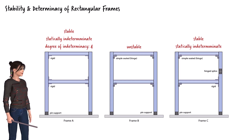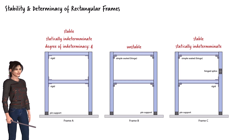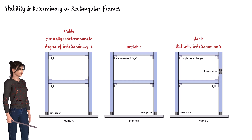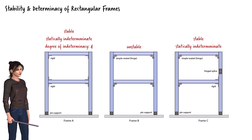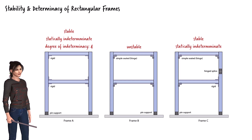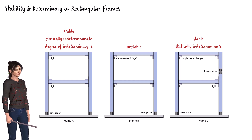To wrap up, the stability of frame structures depends on their geometry, supports, and any internal releases within the structure. By carefully examining the equilibrium equations, we can figure out whether the system is stable and statically determinate. It's mainly about breaking down the problem and understanding how each part contributes to the overall stability of the structure.